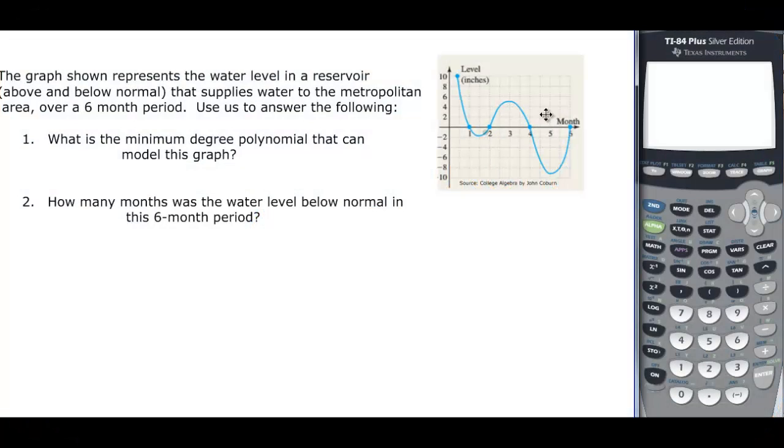We have this graph talking about water levels over a six-month period. It wants to know what is the minimum degree. We've got one turn, two turns, three turns. So three turns means that I can have one more in my degree, so it's degree four.